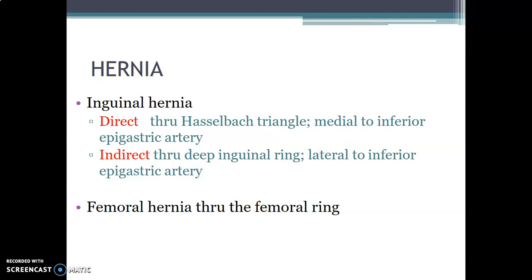Direct inguinal hernia occurs medial to the inferior epigastric artery. Remember, the inferior epigastric artery forms the lateral boundary of Hesselbach's triangle. So if viscera herniates medial to the inferior epigastric artery through Hesselbach's triangle, that is a direct inguinal hernia. But if viscera pass through the deep inguinal ring, which is located lateral to the inferior epigastric vessels, we call that an indirect hernia.